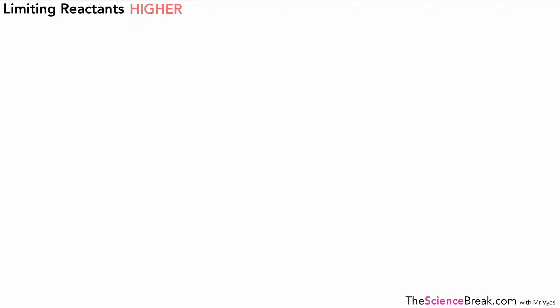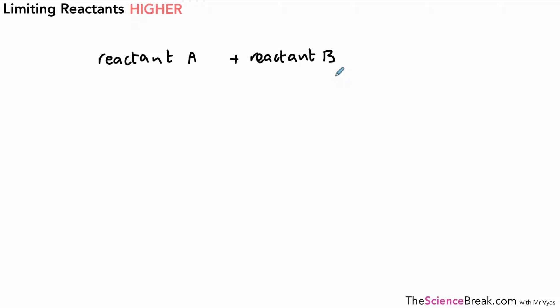Hello, today we're looking at limiting reactants. To help us understand how this works, we're going to take an example of an imaginary reaction. Let's pretend we've got reactant A chemically reacting with reactant B, and when they react together they make a product.